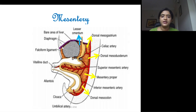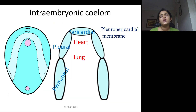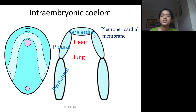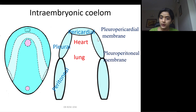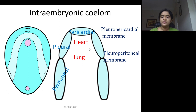Coming to the intraembryonic coelom — the cavity within the intraembryonic mesoderm — it differentiates into the pericardial cavity, pleural cavity, and peritoneal cavity. They are separated by two membranes: the pleuropericardial membrane, which separates the pleural cavity from the pericardium, and the pleuroperitoneal membrane between the pleural cavity and the peritoneum. The heart and lung invaginate into the pleural and pericardial cavities.